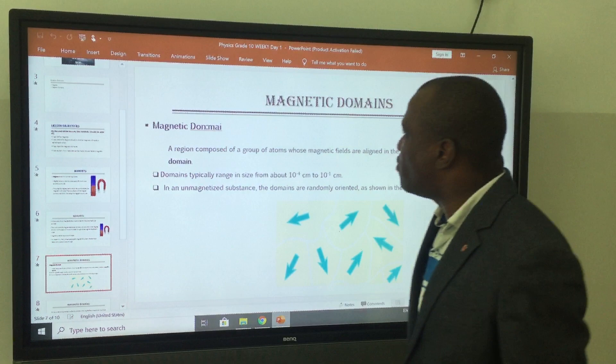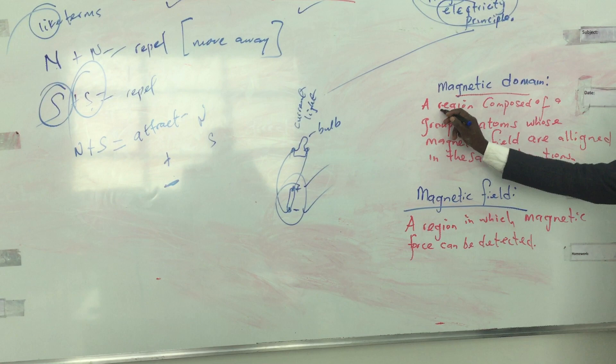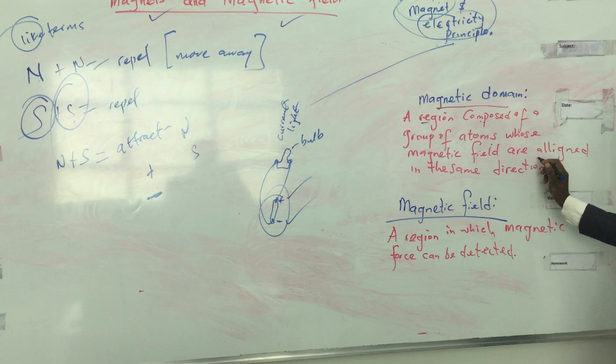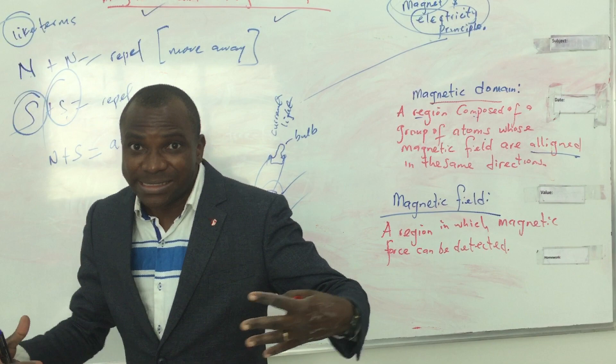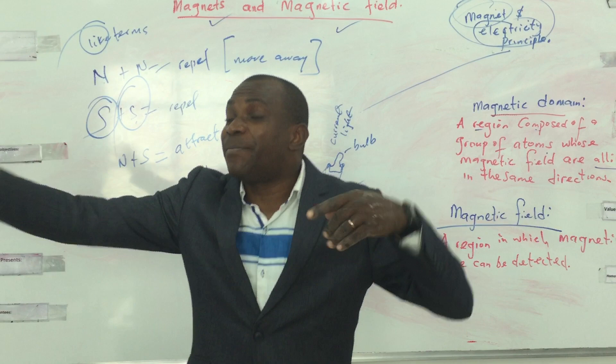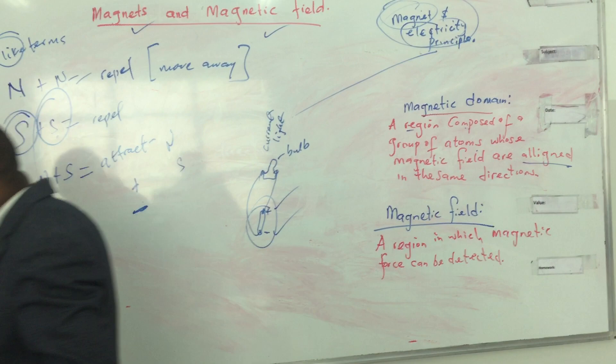Now let's quickly move on to what we know as magnetic domain. What is a domain? Domain means a place, a region, an environment, a surrounding. A magnetic domain is a region composed of a group of atoms where the magnetic fields are aligned — meaning they come together moving in the same direction. That is the meaning of magnetic domain.